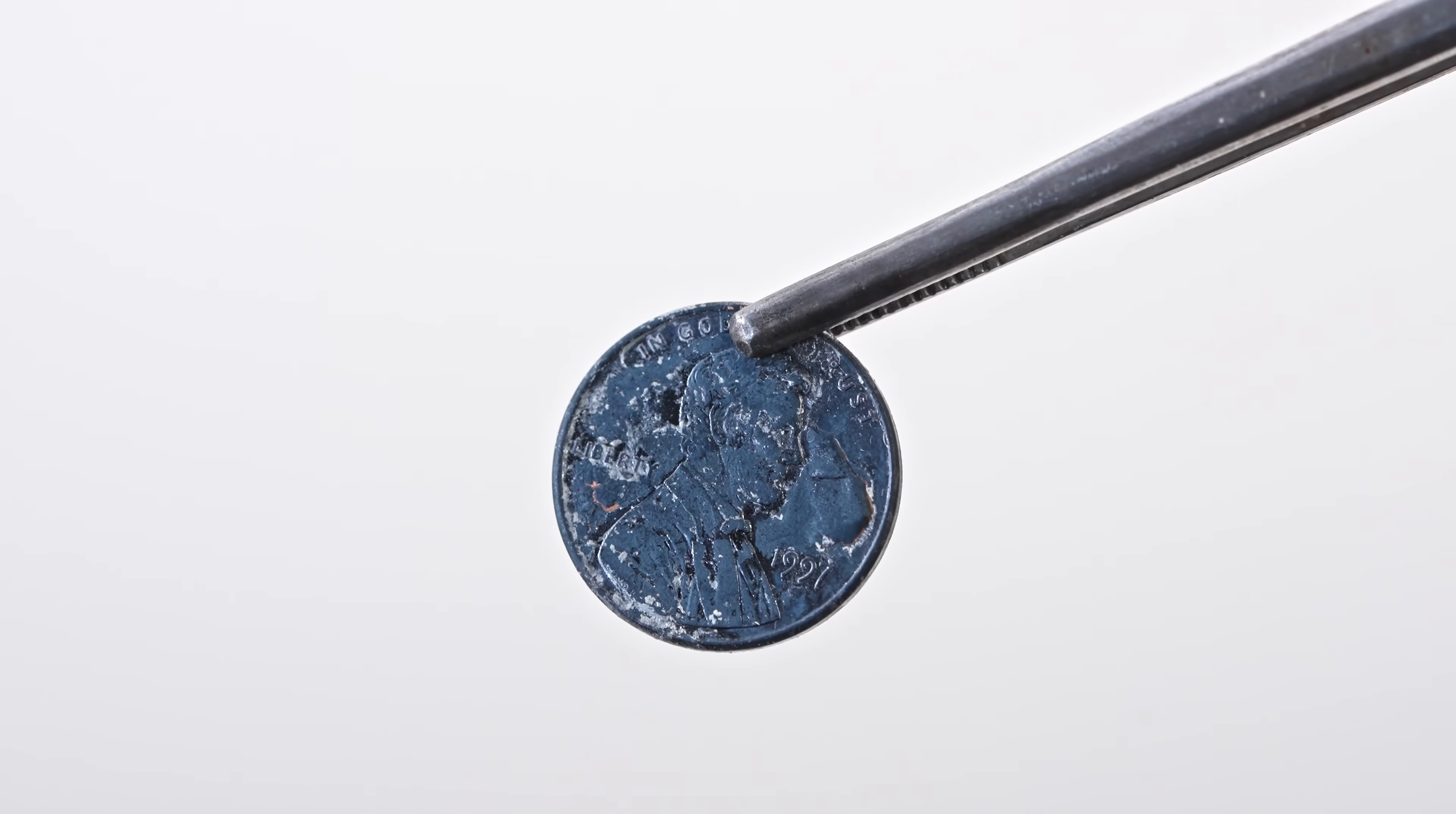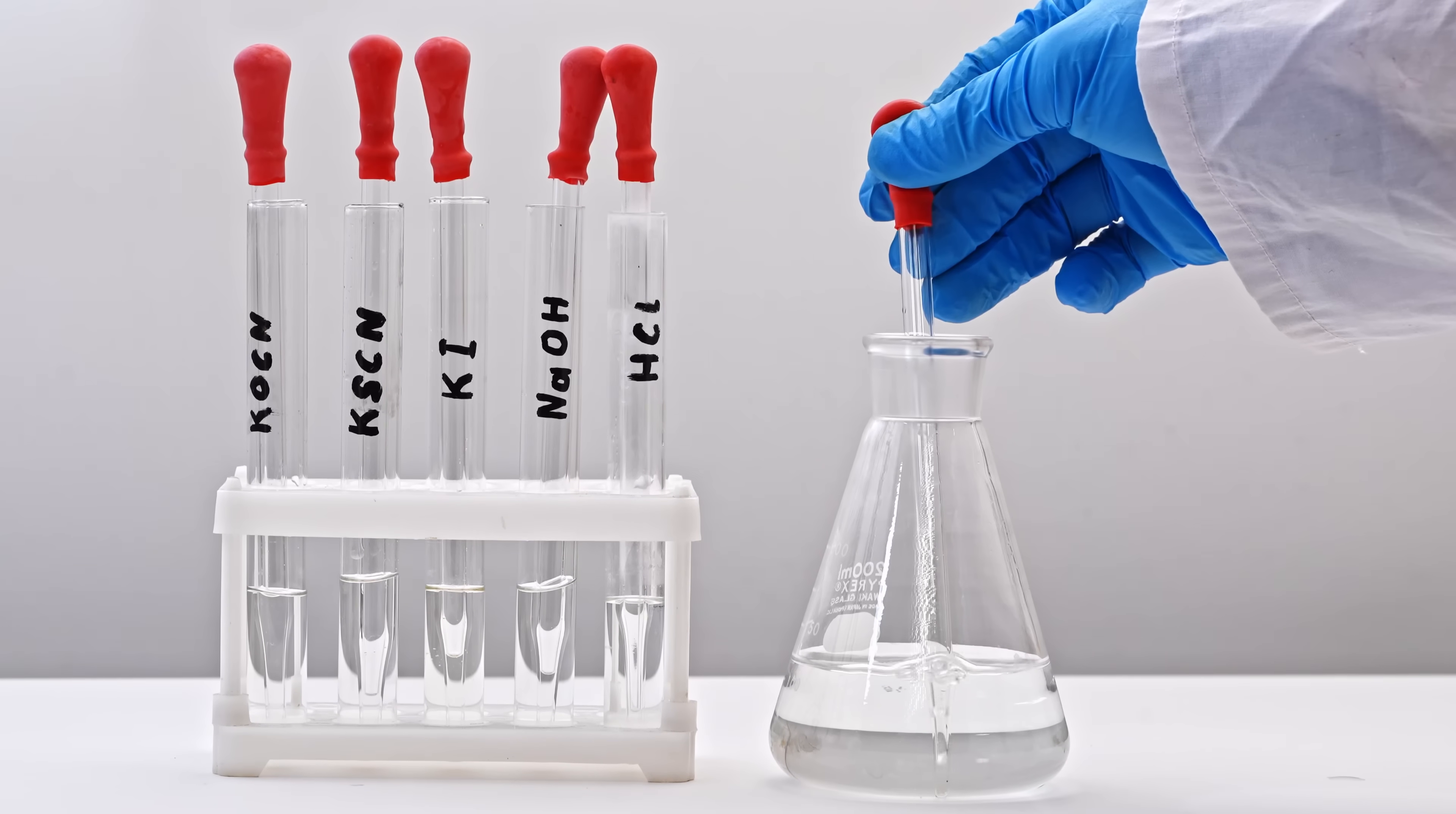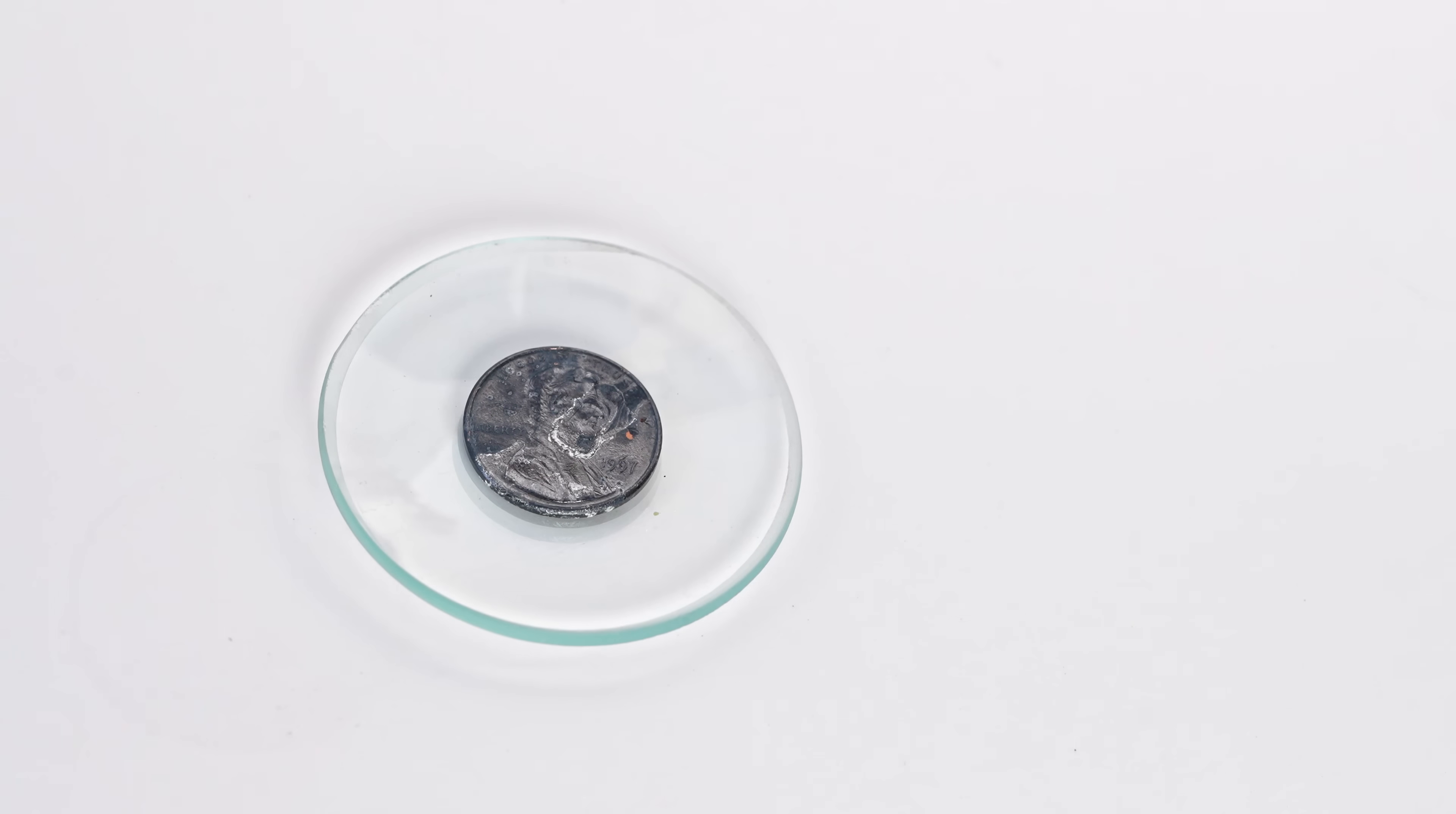Now you have a black penny that cannot be washed off with water. Now, if we add a few drops of a solution containing cyanide ions to this coin, the coin will turn copper color again.